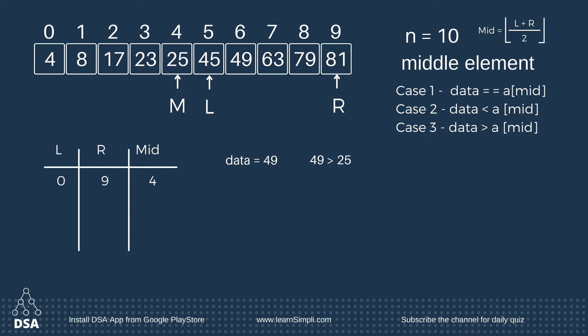Now the left value is 5 and right remains the same, that is 9. Again find the middle value: 5 plus 9 equals 14, divided by 2, and the value is 7. So the new middle value is 7.